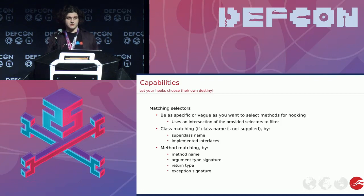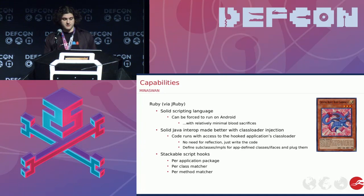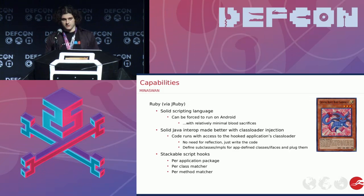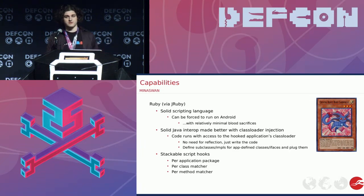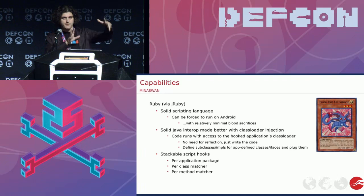Method matching uses the method name, the argument type signature, the return type, and the exception signature. Whatever the total set of those combined, it will find it — or you can be as vague as you want. If you want to just hook toString on Object, anything that subclasses Object, you're going to get a lot of stuff. Ruby, or JRuby really specifically, is pretty useful in this case — much better than Groovy was when I attempted it the first time. It has very good interop with the Java parts. There are only a few cases where you have to do a little bit of reflection to get around some annoying ProGuard stuff. The really useful thing is that I load it under the class loader that is actually for the app itself, so it has native access to load classes from the app without reflection. You can actually define your own subclasses and interface implementers for the Java code of the actual app and then plug them into any functions that take a callback function.